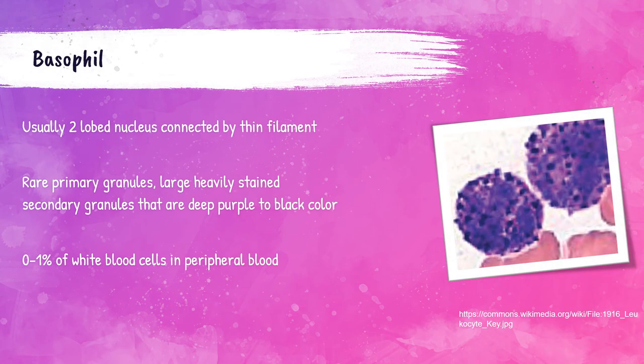Basophils are the least prevalent leukocyte in the peripheral bloodstream, with zero to one percent of total white blood cells. They usually have a two-lobe nucleus connected by a thin filament. They are characterized by large, heavily stained granules that are deep purple to black in color — oftentimes you cannot even see the nucleus because there are so many deeply colored granules.